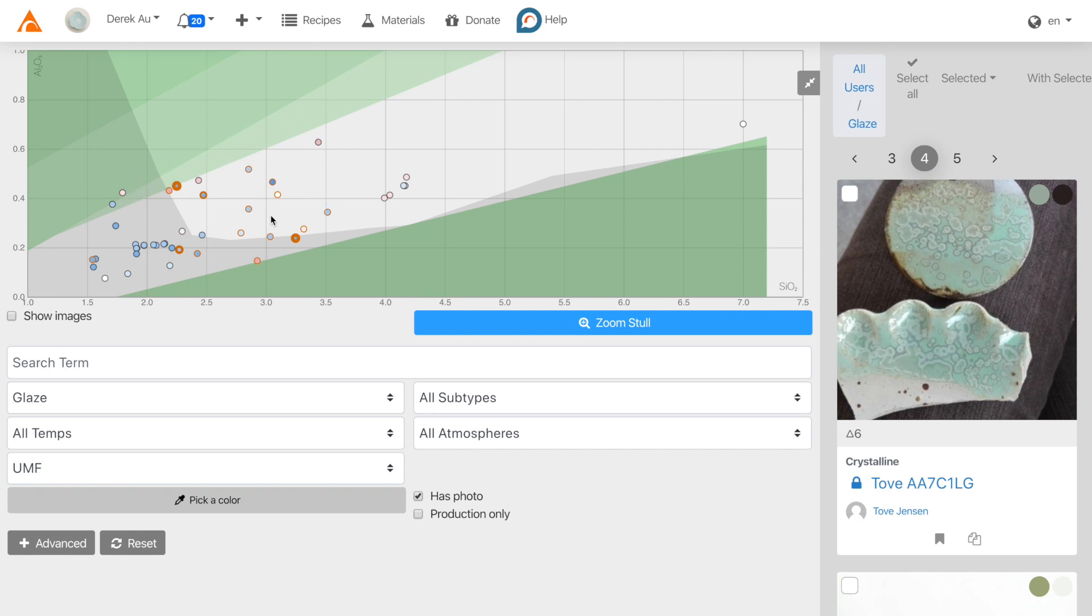The Stull chart is a very good indication of what the glaze type will be, either matte, semi-matte, or glossy.